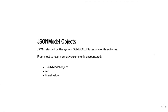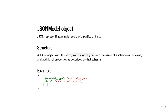JSON Model objects are JSON that matches a specific set of formats — these schemas. There are generally three types of things returned by the system. Most things you'll encounter are JSON model objects: JSON that represents a single record of a particular kind. The structure is that they're a JSON object with a key json_model_type that has the name of a schema as its value, and then also contains the properties described by that schema.